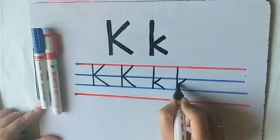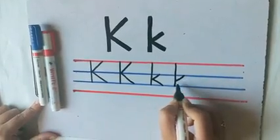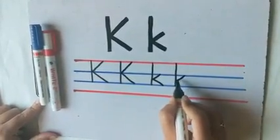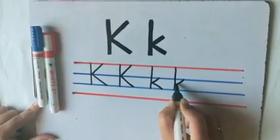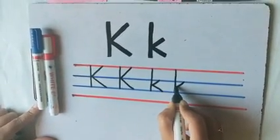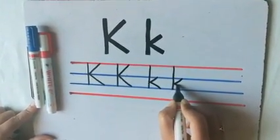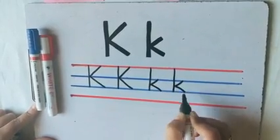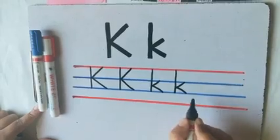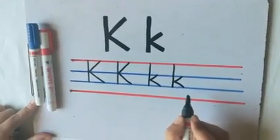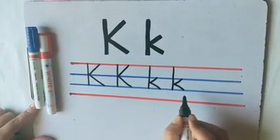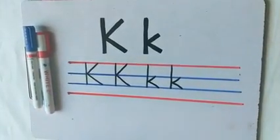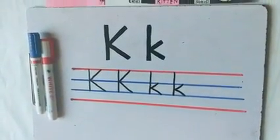Stop in between the two blue lines. From this point we will make a left slanting line, stopping on the second blue line. This is small letter K.